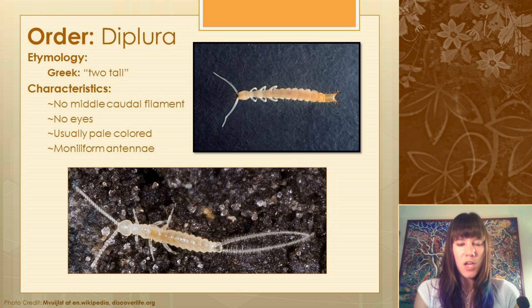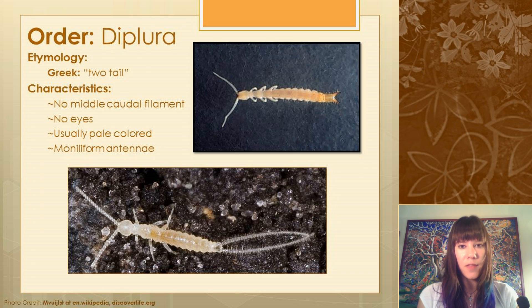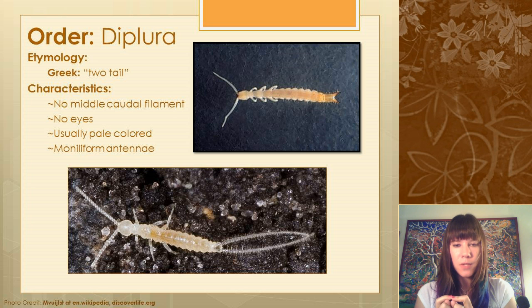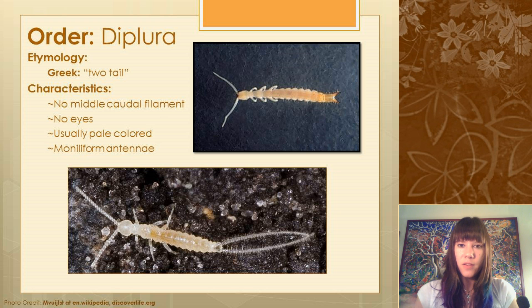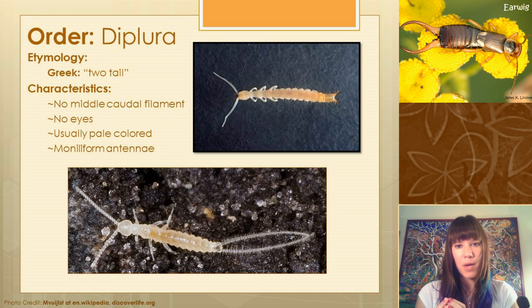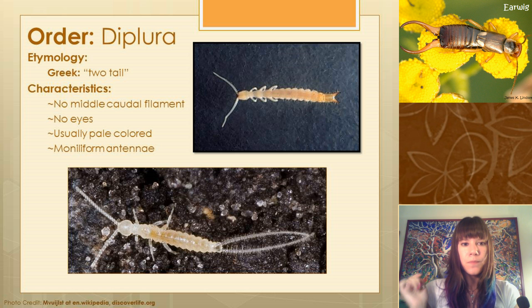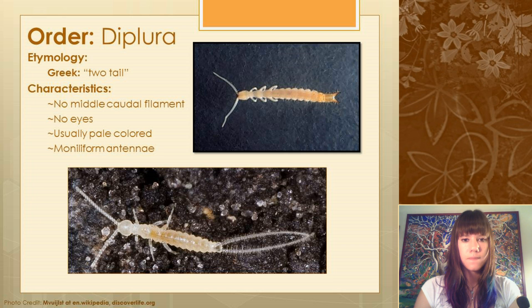The next hexapod order is Diplura. In Greek this just means 'two tail,' because they have two filaments coming off the end of their abdomen with no middle tail. One family in this order looks like they have earwig pincers on the bottom of their abdomen, but you can tell them from earwigs because they have no eyes, are usually pale colored, and have moniliform antennae.